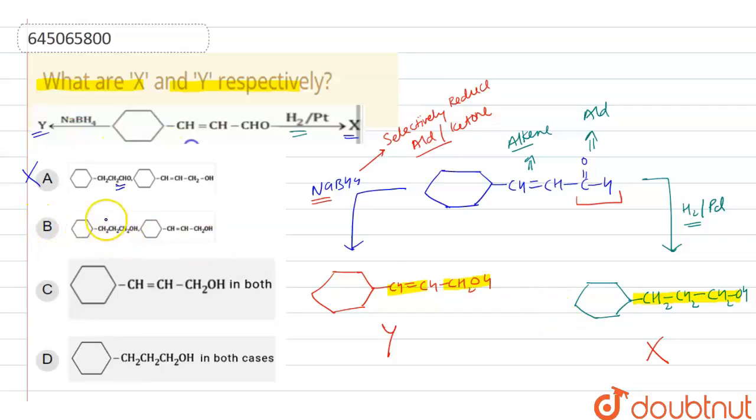Let's check option B. In option B, we have alcohol. Yes, alcohol is there. Here alcohol is there. And in another option, alcohol and alkyne both are there. So this is X and this is Y. So option B is the correct answer for this question. Thank you.